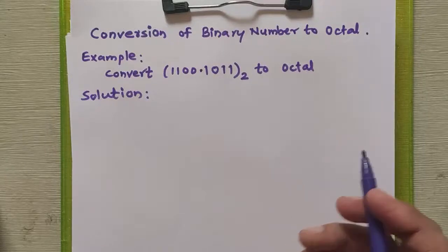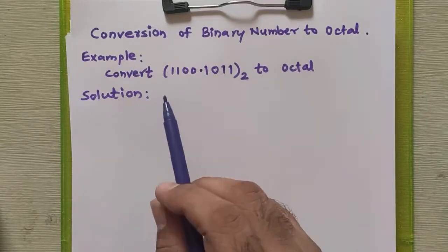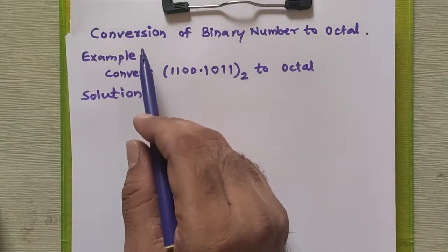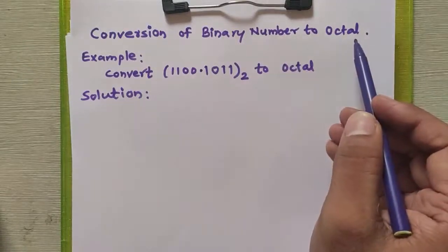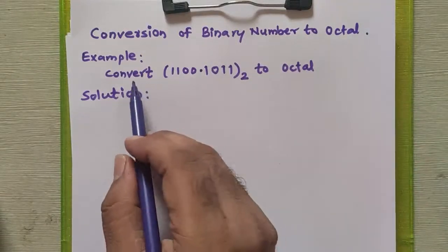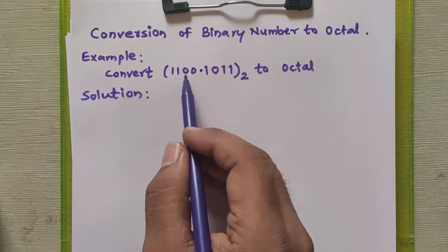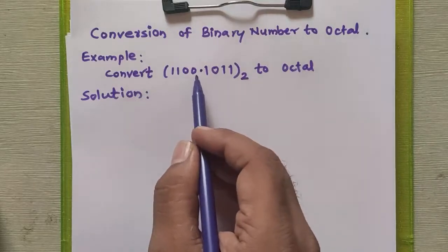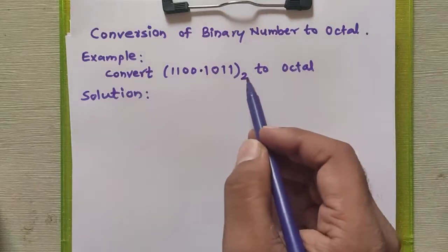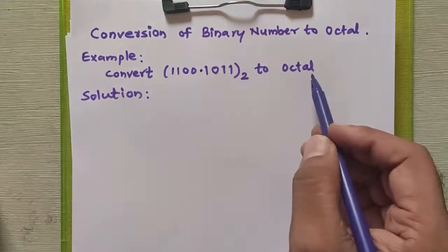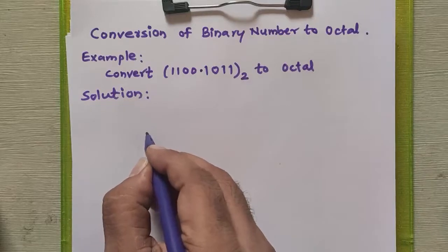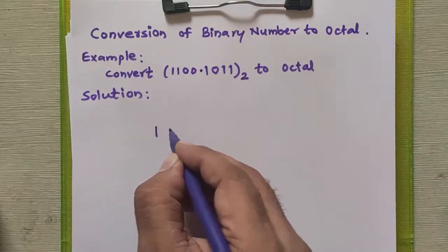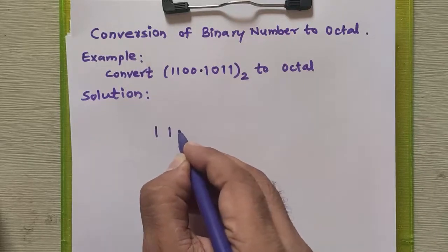Hello everyone. In this tutorial, we will study how to convert a given binary number to an octal number. In this example, 1100100 binary will be converted into octal. First of all, we will write the given number as it is in the solution part.